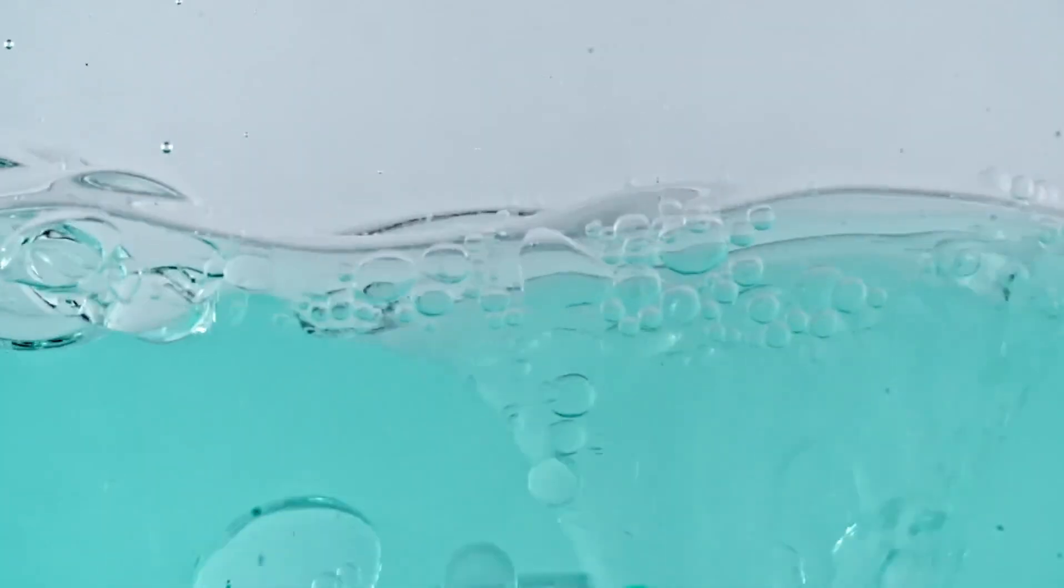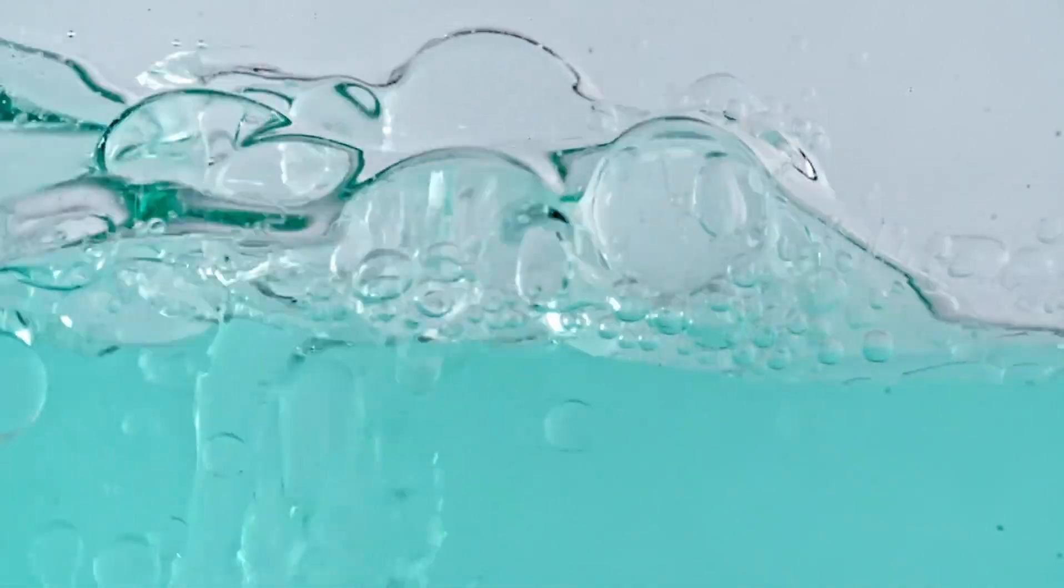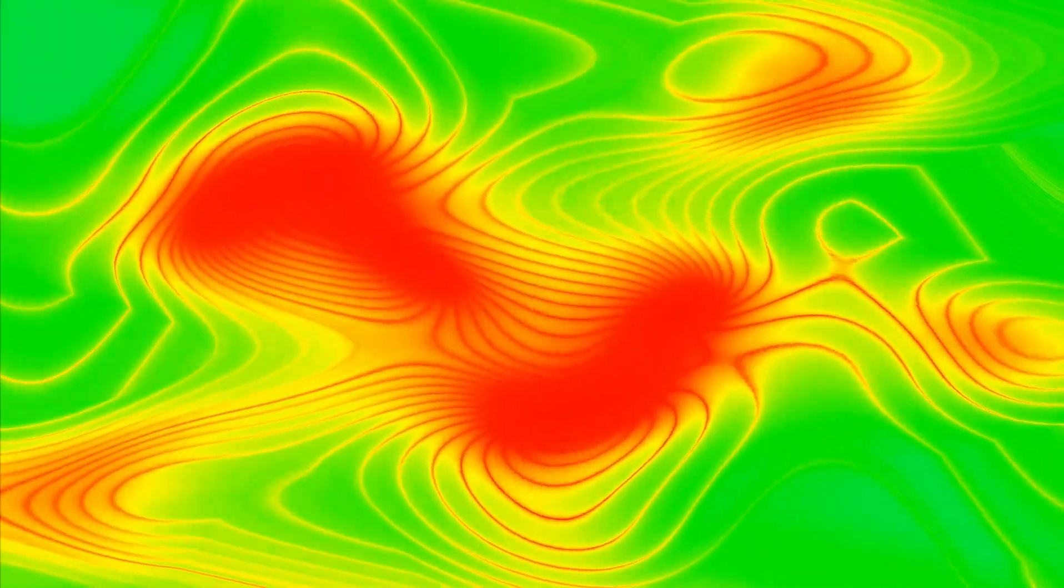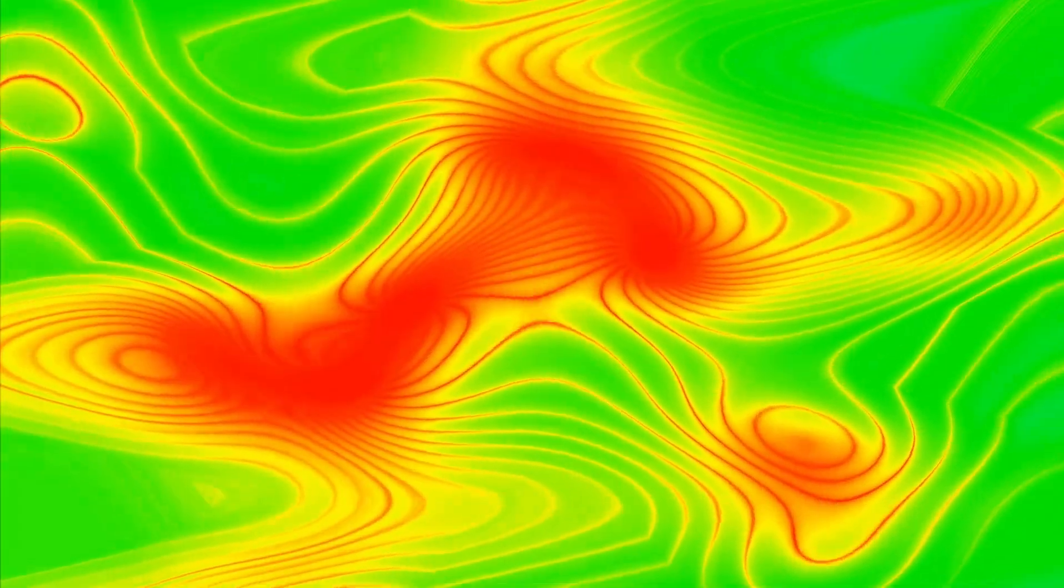Some physicists describe these fields as fluid-like, similar to water in a pool, while others compare them to a room filled with varying levels of energy, like a field of distributed heat. These fields are constantly moving due to quantum fluctuations, brief changes in energy similar to ripples in a wave caused by external forces exciting the particles within the field. For example, an electromagnet can cause changes in an electromagnetic field.